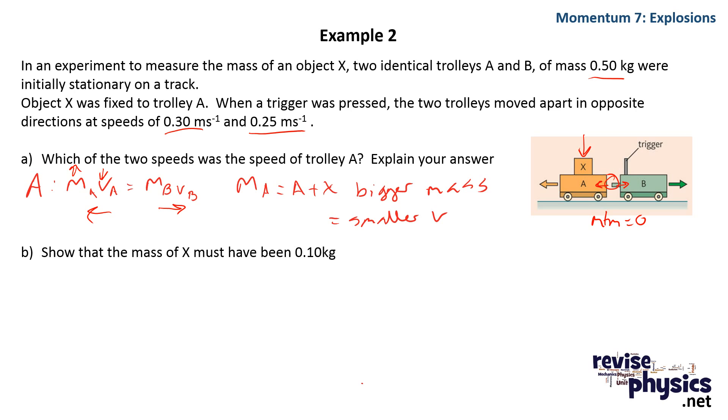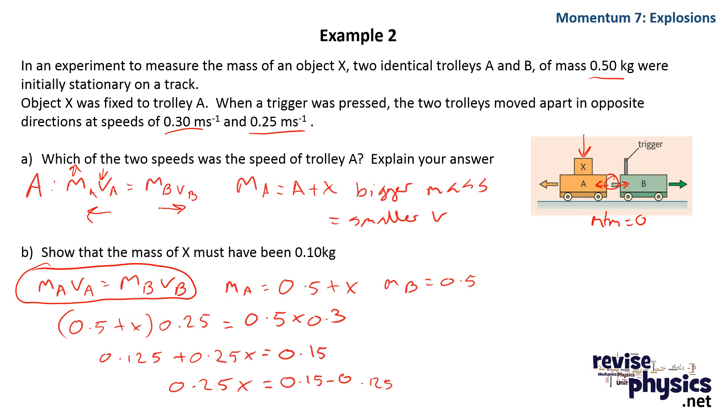The next question asks you to show that the mass of x must have been 0.10 kilograms. Well, again, if we get our conservation of momentum written down here, and we know that mA is 0.5 plus x, and mB is just 0.5,